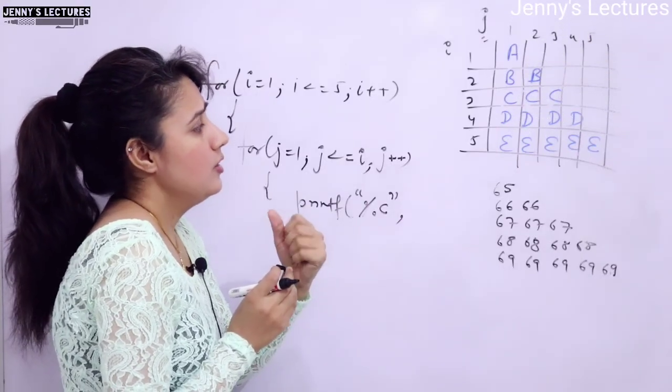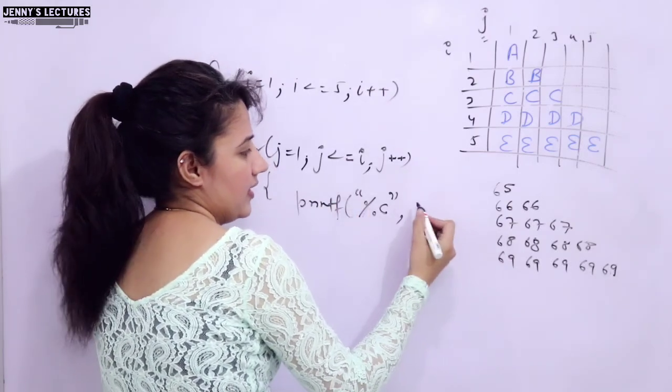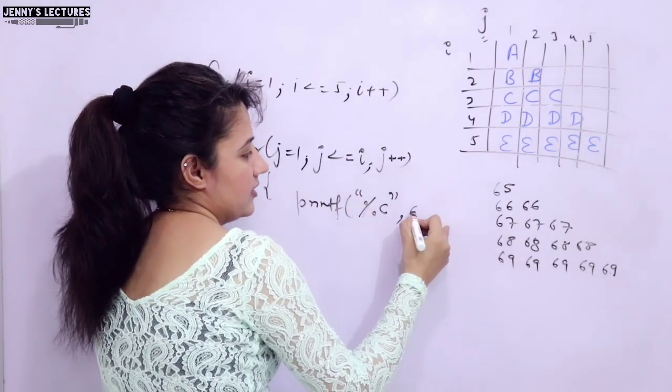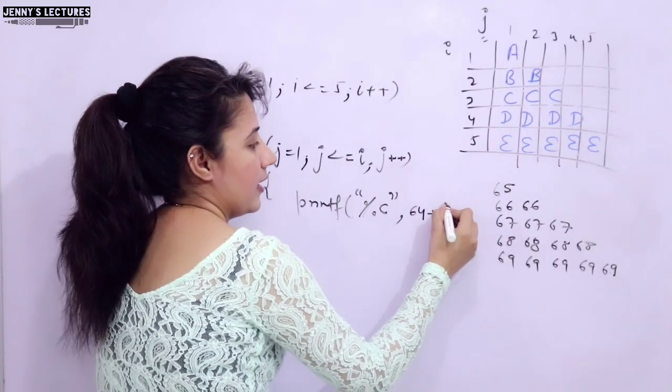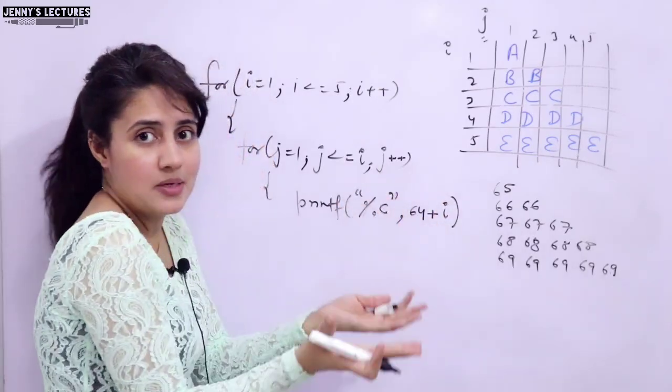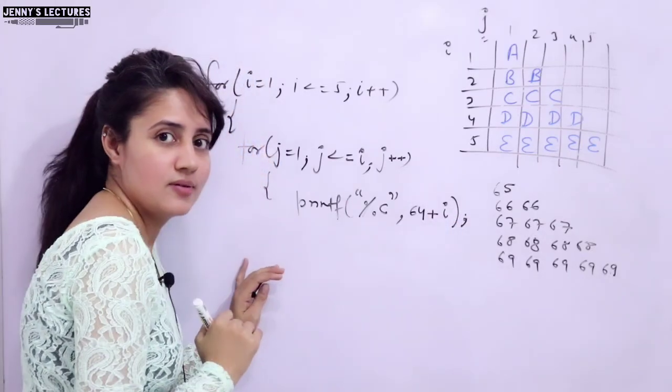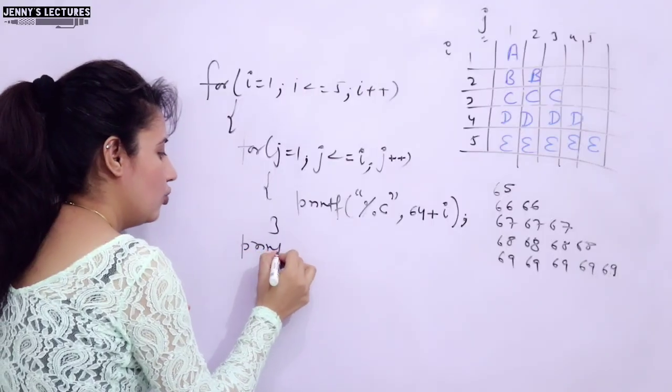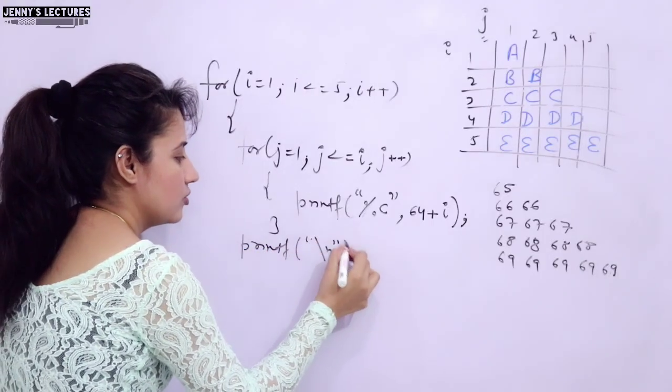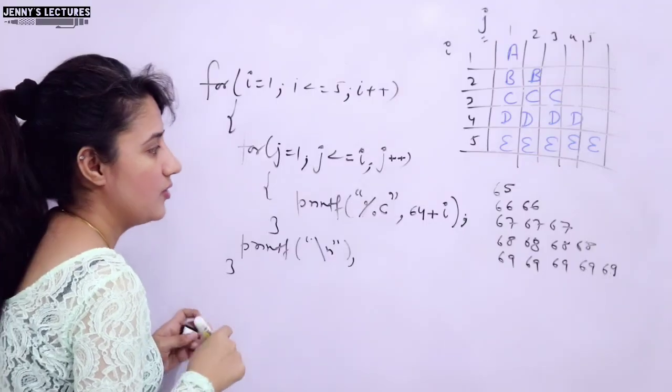What you will print here? This is a little bit different from the previous case. Here also we have only i and j, or you can use some numbers. You can do some addition, multiplication, division. You have to find out what you can write here. If I write here something like 64 + i, or you can write i + 64, it's up to you. And semicolon. That's it. And in the outer loop, what we will write? Slash n for the new line operator. That's it.